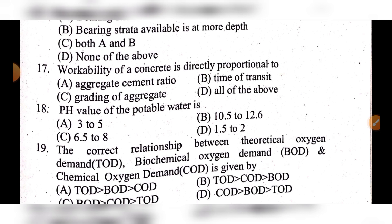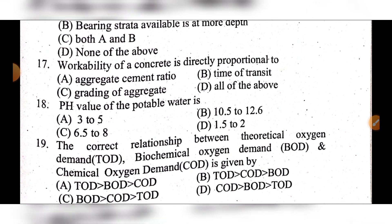Question 18: The pH value of potable water is — option A: 3 to 5, option B: 10.5 to 12.6, option C: 6.5 to 8, option D: 1.5 to 2. The answer is option C: 6.5 to 8.